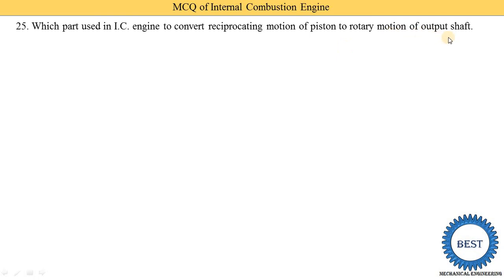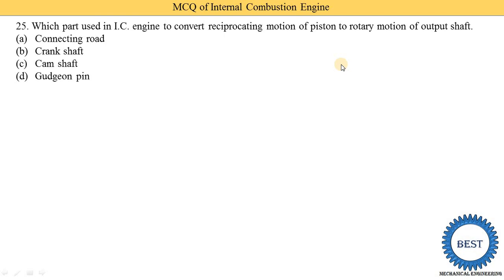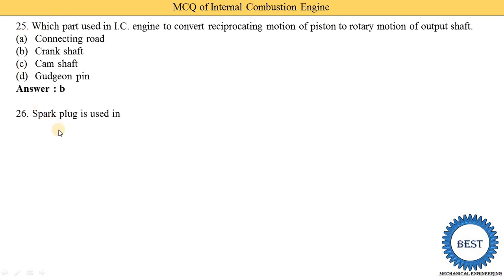Next MCQ: which part of the IC engine converts reciprocating motion of the piston to rotary motion of the shaft? Option A: connecting rod, option B: crankshaft, option C: camshaft, option D: engine pin. The piston is connected to the connecting rod, which is connected to the crank. The reciprocating motion of the piston is converted into rotary motion by the connecting rod. So option A is the correct answer.